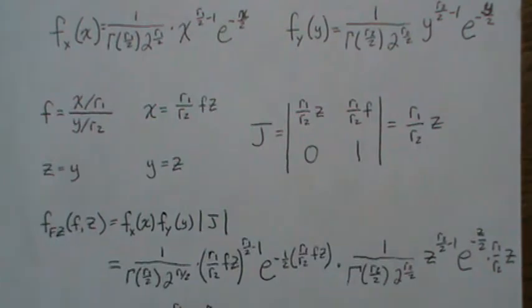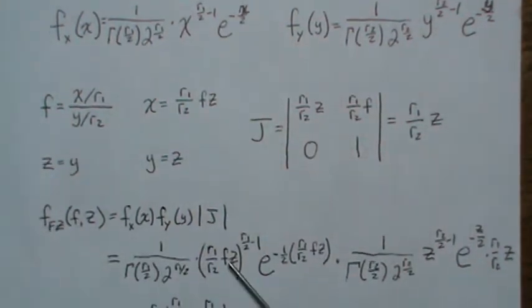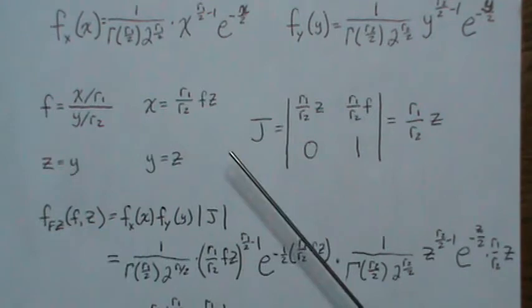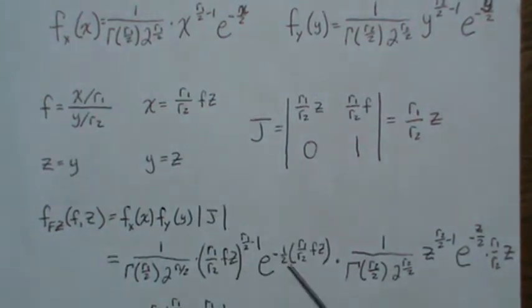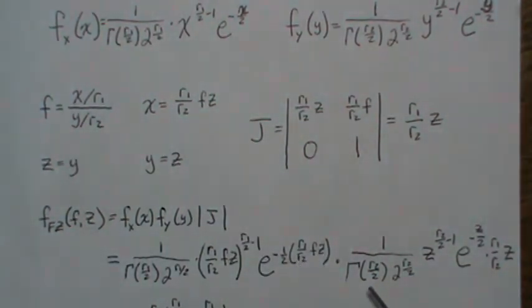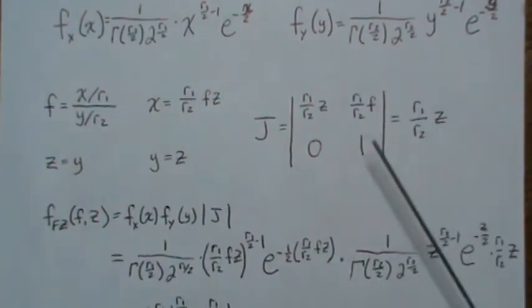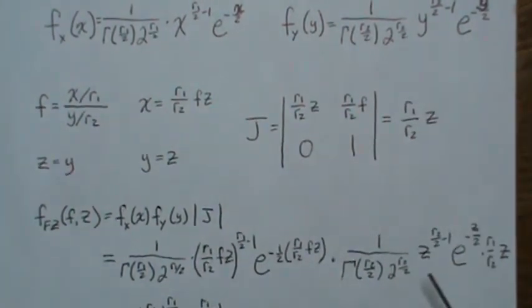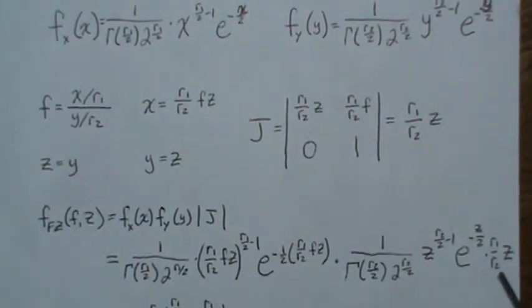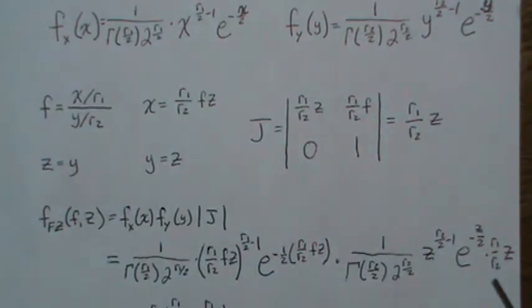Wherever there was an x in the formula, we substitute this expression for x. And wherever there was a y in the formula, we put in z. Then we multiply by the Jacobian, r1 over r2 times z.